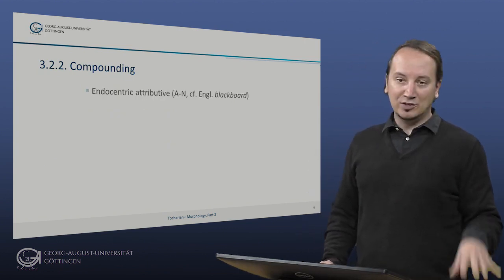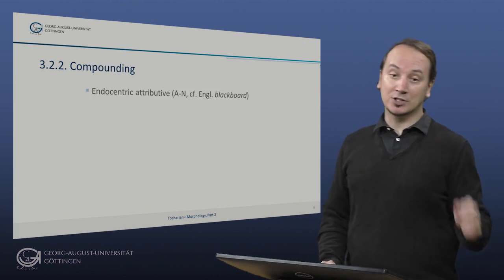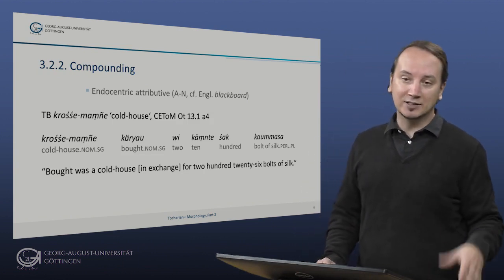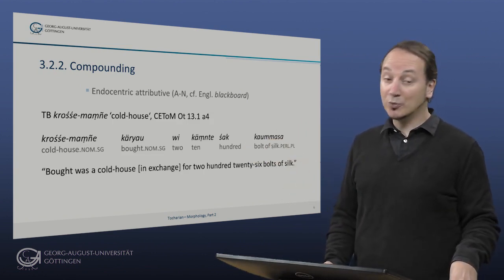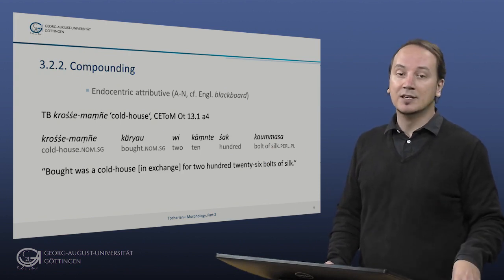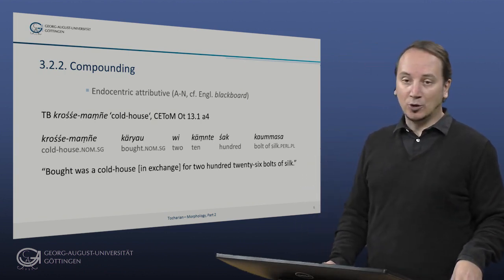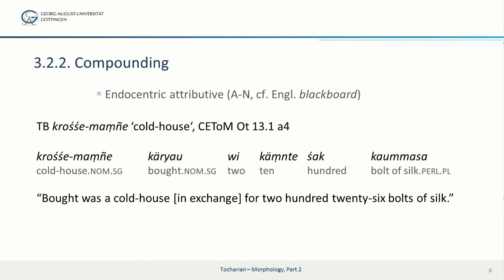The classic example of endocentric attributive compounds are of course compounds of the adjective noun structure, like English blackboard. And for Tocharian we find here a kroše manje, literally a cold house, so some kind of a refrigerator house. And this passage here is taken from one of the few non-religious texts, specifically an economic text that deals with some sort of accounting. It is from the small Japanese collection of Tocharian called Otani. So kroše manje, kyrjao, vikunte, shak kaumasa bought was a cold house, some kind of refrigerator, in exchange for 226 bolts of silk.